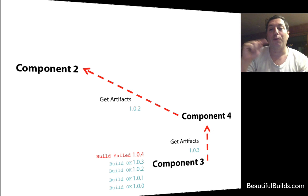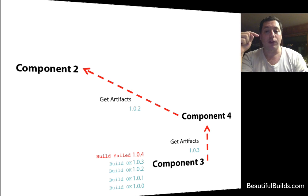Component four depends on component three. And component three actually has a newer version than 1.0.3. It's actually working on new APIs, which are on version 1.0.4. But we're getting 1.0.3, which is the last successful one.